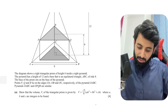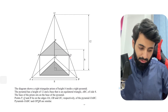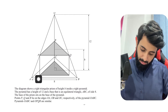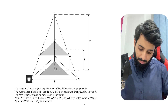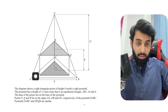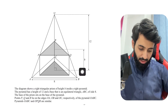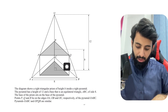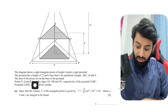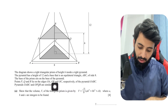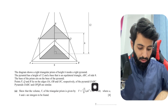The question says: the diagram shows a right triangular prism. I'll point exactly towards the prism — this is the prism of height h inside the right pyramid. The bigger shape, OABC, is the pyramid. It has a height of 12 and a base that is an equilateral triangle ABC of side 8 cm. The base of the prism sits on the base of the pyramid, and points P, Q, and R lie on edges OA, OB, and OC respectively.